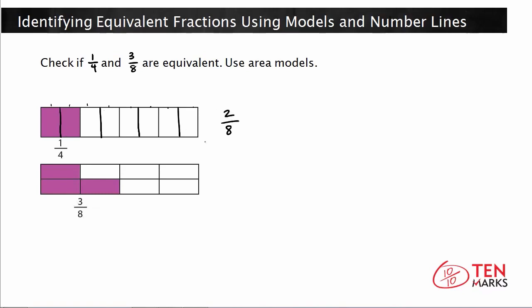And now we're going to compare this to the fraction three eighths. Three eighths and two eighths are not the same — three eighths is greater than two eighths. You have two of these one-eighth pieces in the top model, but down here you have three of these eighth pieces. So you have more area being taken up by three eighths than two eighths. These are not equivalent.